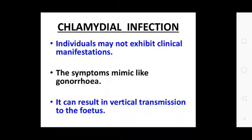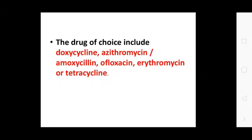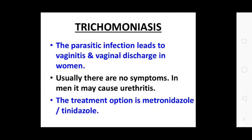Chlamydial infections: Individuals may not exhibit clinical manifestations. The symptoms mimic gonorrhea. It can result in vertical transmission to the fetus. The drugs of choice include doxycycline, azithromycin, ofloxacin, erythromycin, and tetracycline. Trichomoniasis: The apparent infection leads to vaginal discharge in women. Usually there are symptoms when it causes urethritis. Treatment options are metronidazole and tinidazole.